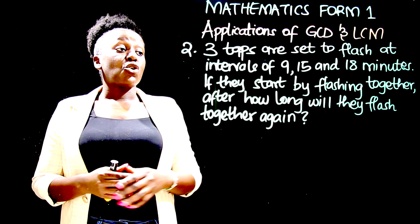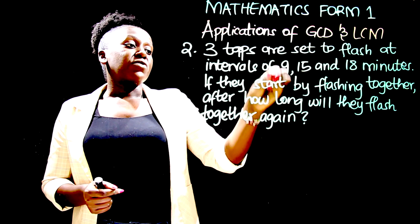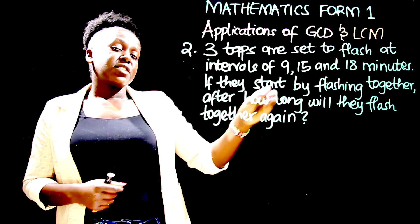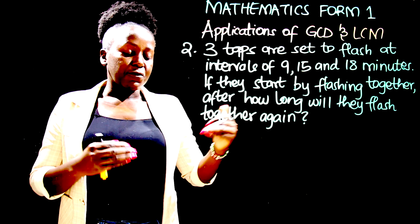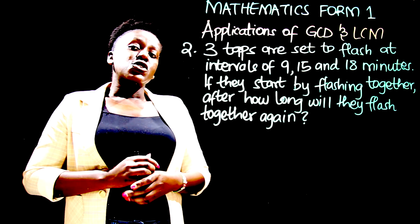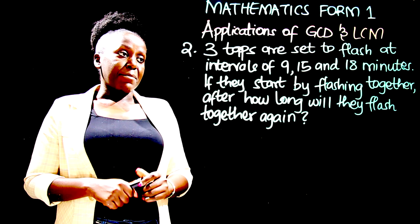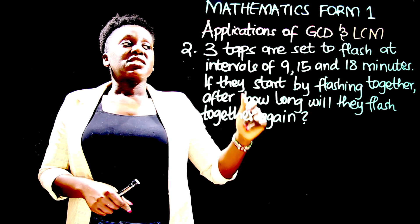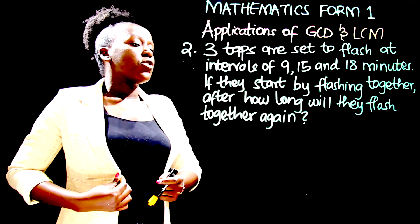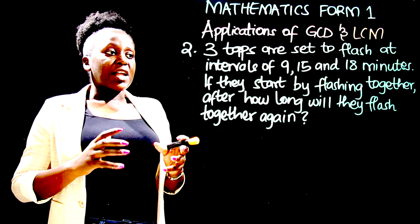You realize that that time is definitely going to be greater than 9, 15, and 18, so it is most likely a multiple of 9, 15, and 18. So what we need to get here is the least common multiple — because the time that will be taken for them to flush again together is definitely a bigger number than 9, 15, and 18. So let us determine the least common multiple for these three numbers. In this case, we're going to use the listing method.